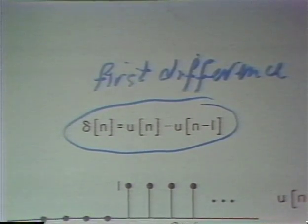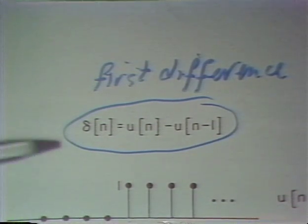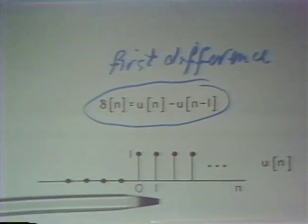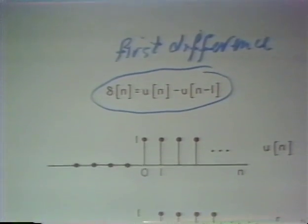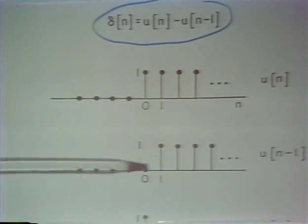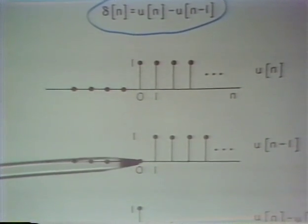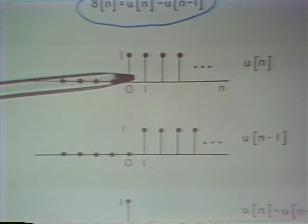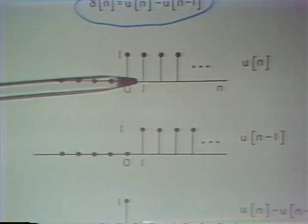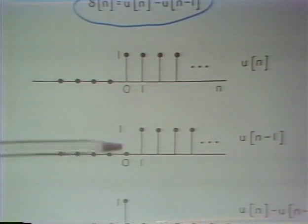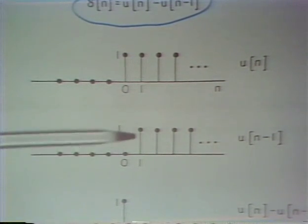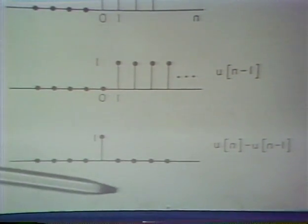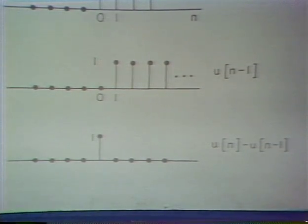To see the validity of this expression, we can simply look at the unit step and its delayed version. Here we show u of n, and here we show the unit step delayed by 1, so it's 0 for n less than or equal to 0. Clearly, if we subtract the delayed step from the original unit step, everything subtracts out except at n equals 0, at which point the difference is equal to 1. So the difference between u[n] and u[n-1] is simply the unit impulse, sometimes also referred to as the unit sample.